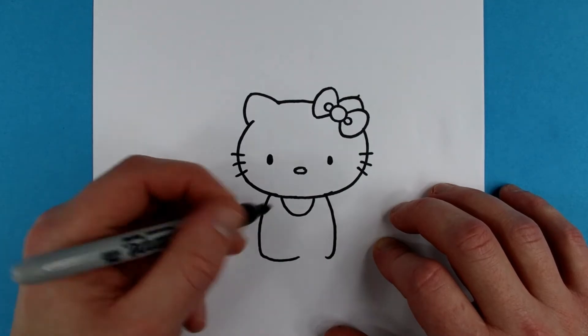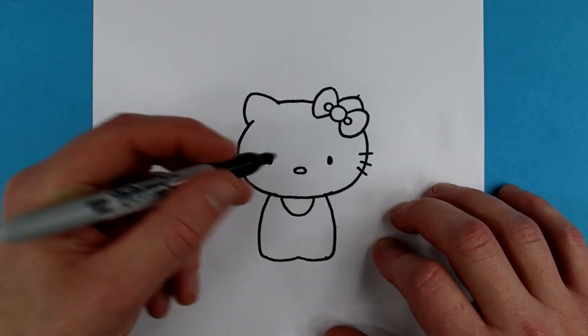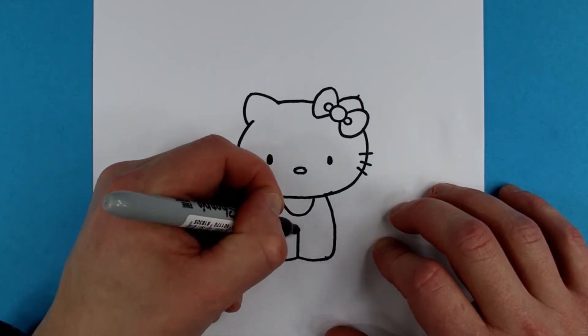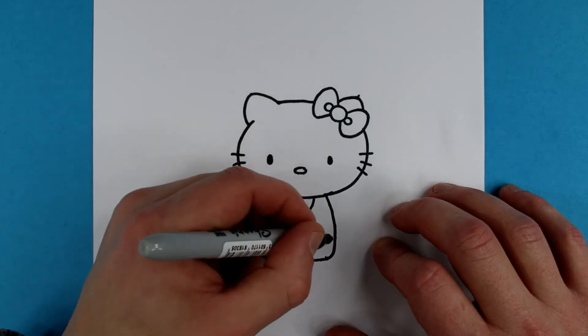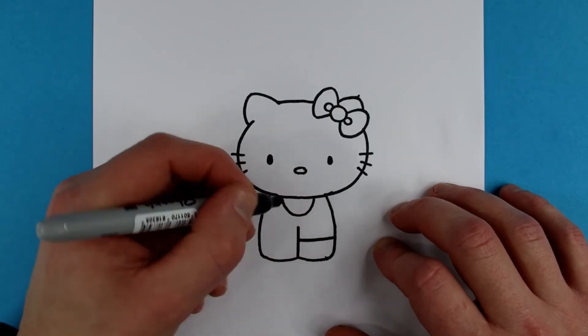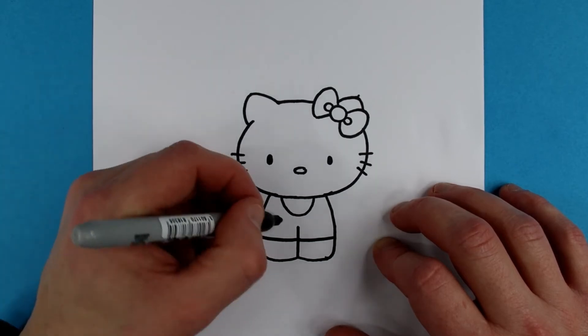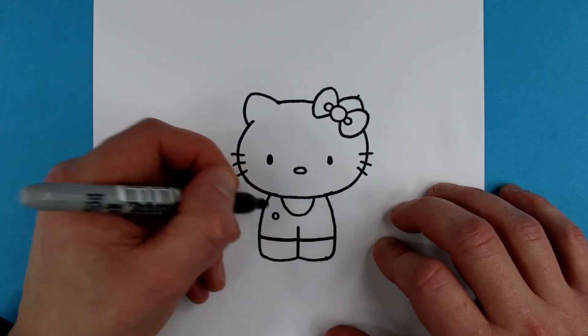And for the feet, two arches like these. A vertical line till here. And two lines like these to indicate the end of her dress. Two little buttons.